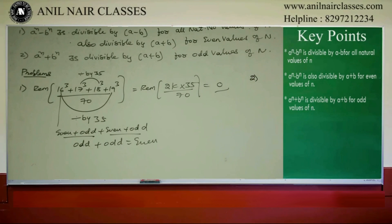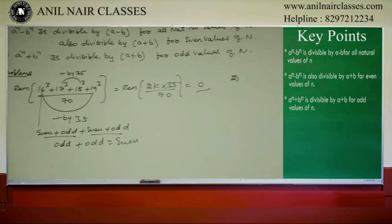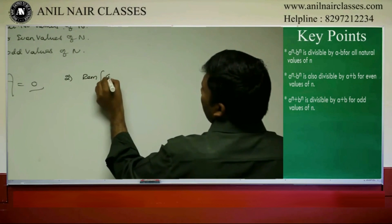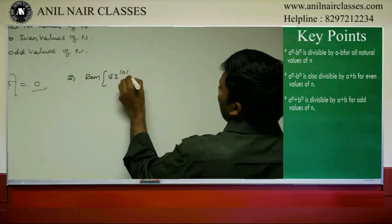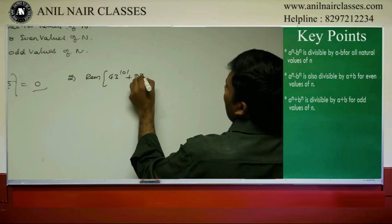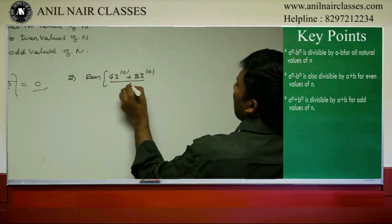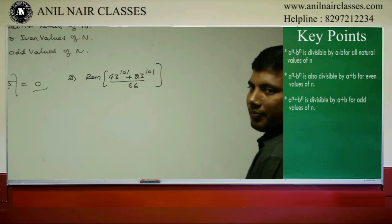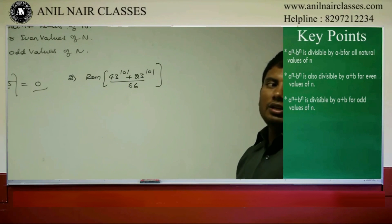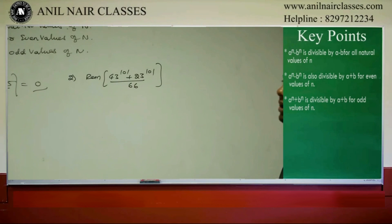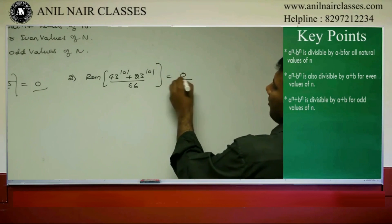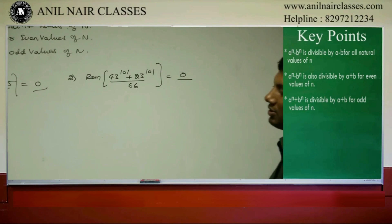Problem two — find the remainder: 43 power 101 plus 23 power 101 divided by 66. Using the rule A power n plus B power n is divisible by A plus B for odd n: here 43 plus 23 equals 66, and the power 101 is odd, so the expression is divisible by 66 and the remainder is 0.